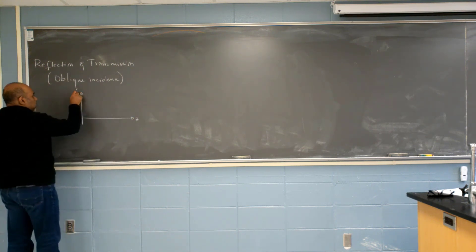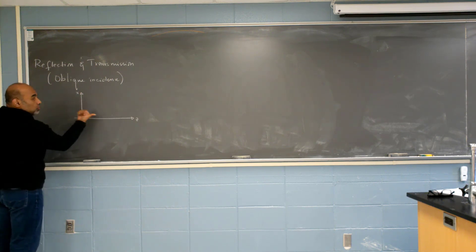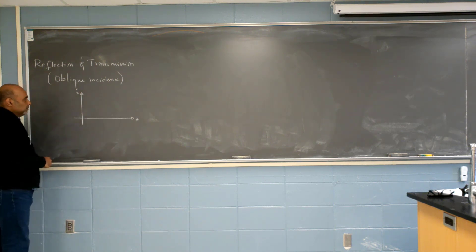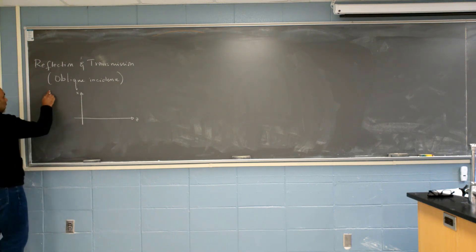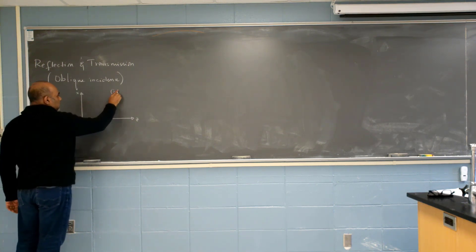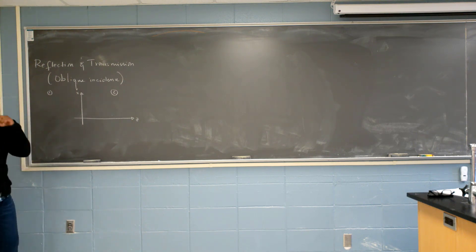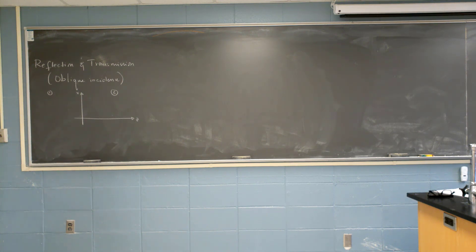Y is coming out of the board, so that x cross y is z. So this is the interface — this is medium one, and this is medium two. Draw a picture, and slowly the picture will be justified along the way. It looks like a cartoon picture now, but that's not true. This is entirely correct.